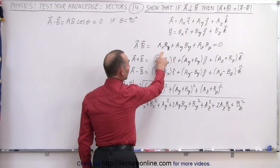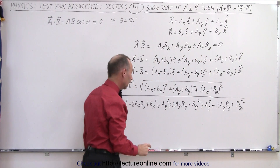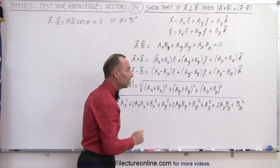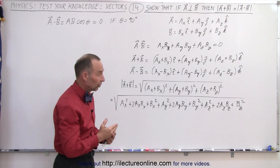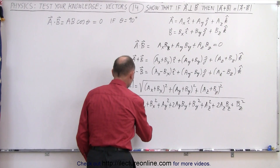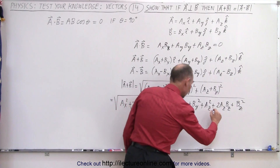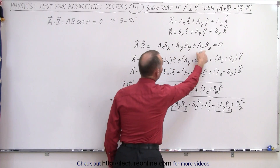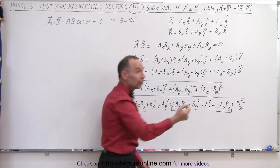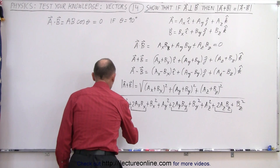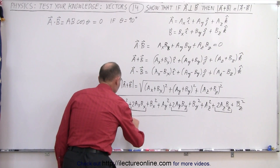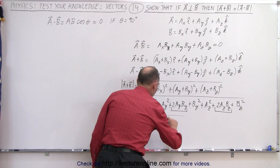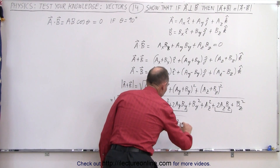When expanded, we get A_X² + 2A_X B_X + B_X² + A_Y² + 2A_Y B_Y + B_Y² + A_Z² + 2A_Z B_Z + B_Z², all under the square root. Notice that A_X B_X + A_Y B_Y + A_Z B_Z equals zero, so twice that sum also equals zero. Those cross terms drop out, leaving the square root of A_X² + B_X² + A_Y² + B_Y² + A_Z² + B_Z².